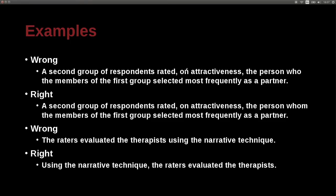'The person who the member of the first group selected most frequently as a partner' — 'who' is wrong here; the correct version uses 'whom': 'the person whom the members of the first group selected.' A general rule of thumb: if you can replace the word with 'he or she,' use 'who.' If you can replace it with 'him or her,' use 'whom.' In this case, it's 'the person, him or her,' so we use 'whom.'